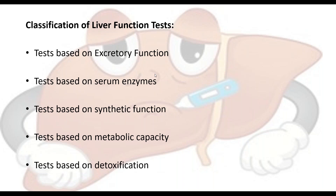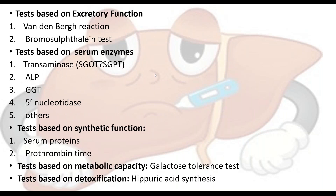We shall begin with the first category: the excretory function of the liver. Under excretory function, what is involved is the excretion of cholesterol, bile pigments, and bile salts. When we studied protein metabolism, we saw that bilirubin, biliverdin, and urobilinogen are substances formed in the liver that must be excreted into the intestines. Bilirubin gets converted to stercobilin and urobilinogen, which are excreted through fecal matter and urine respectively. In the excretory function test, what is measured is the concentration of bile salts and bile pigments.